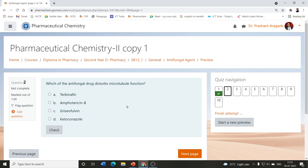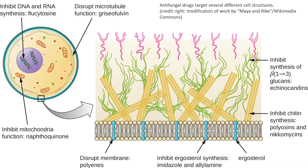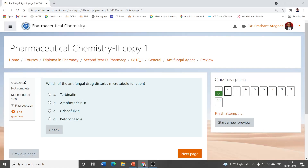Which of the antifungal drugs disturbs microtubule functions? All options are antifungal agents and you need to select the one which acts by disturbing microtubule functions. Looking at the mechanism of actions of antifungal agents, we find that griseofulvin disturbs microtubule functions. So the correct answer is griseofulvin.